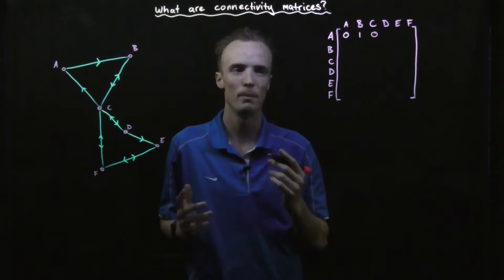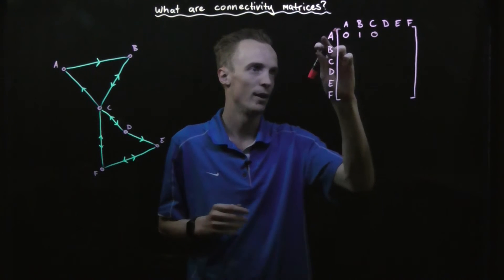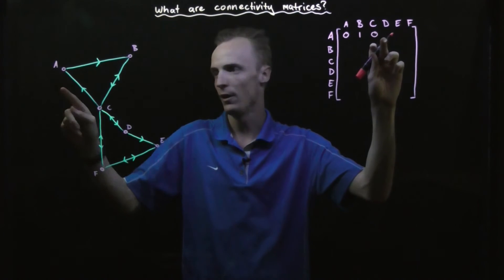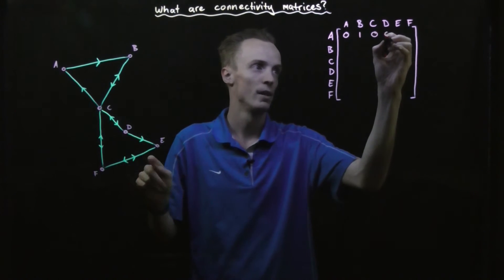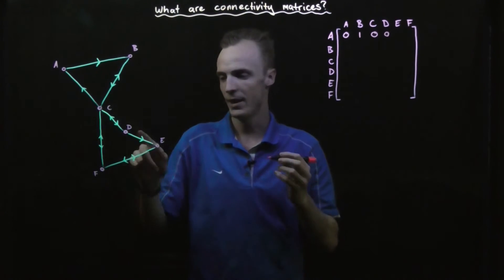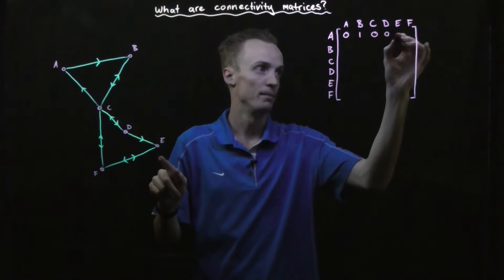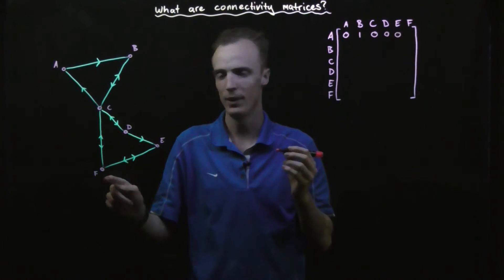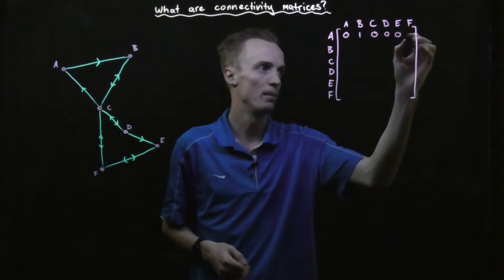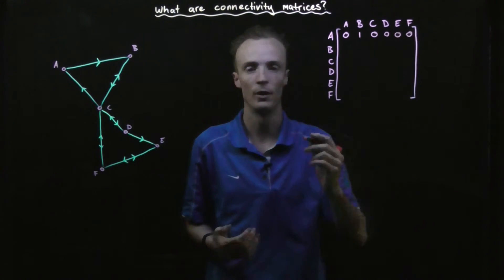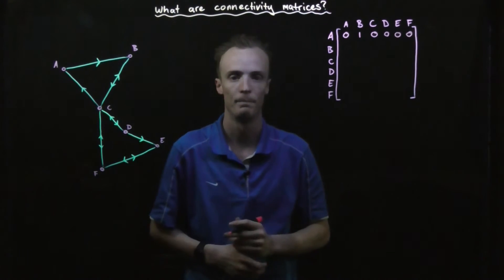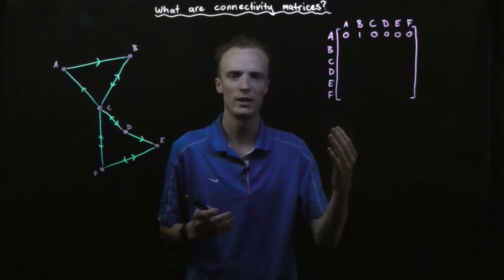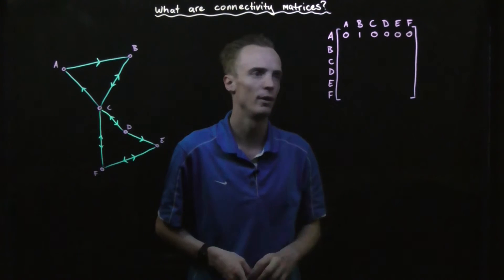We repeat this as we move along. A to D — there's none. A to E — there's none. And A to F — there's no one-step pathway that will get us there. Once we've done that row, we just continue in the same process.